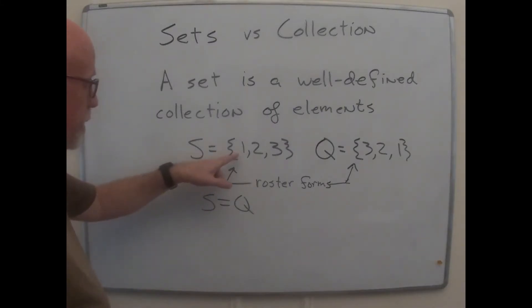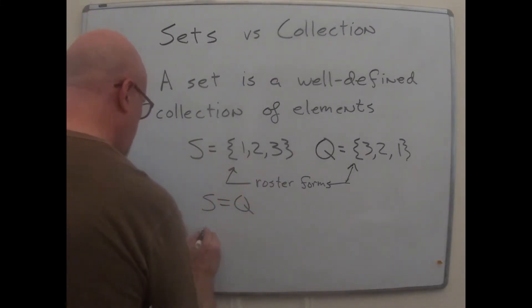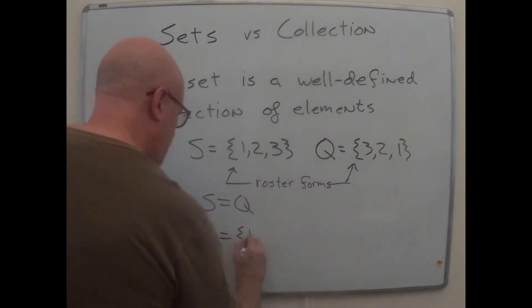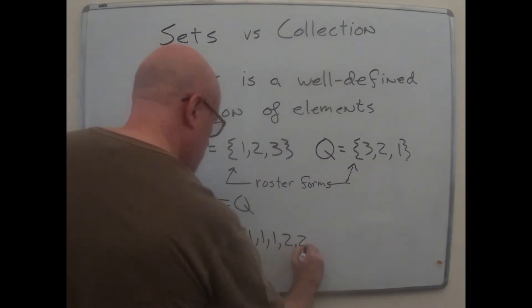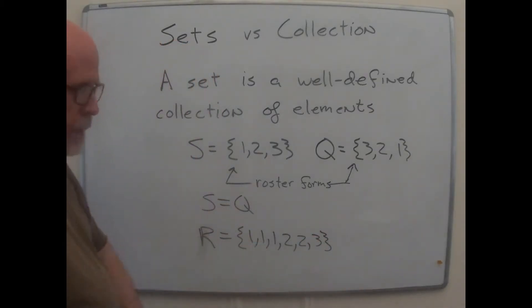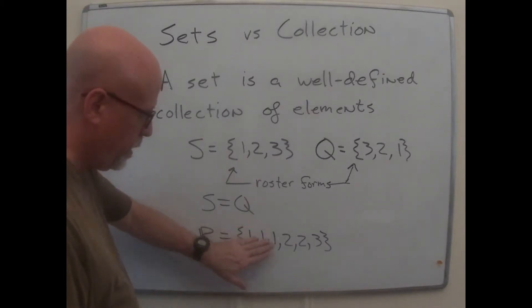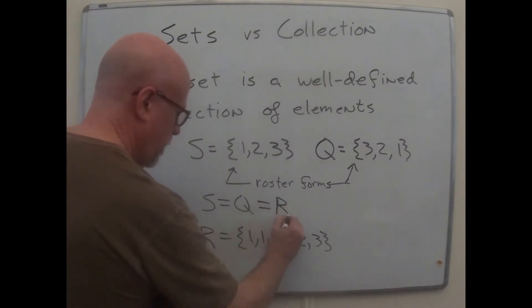And I made the point that you can write multiple copies of a thing down if you want, but it doesn't really influence what collection of things you've got. So if I had, let's get a new one, how about R? If R was, I've got a bunch of ones, a couple of twos, and a three. It is wasting ink. All you really should be writing is I've got one, I've also got two, and I've got three. So this R that we just created, it's also the same as S and Q.